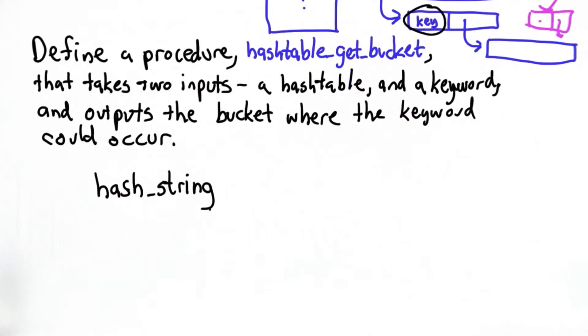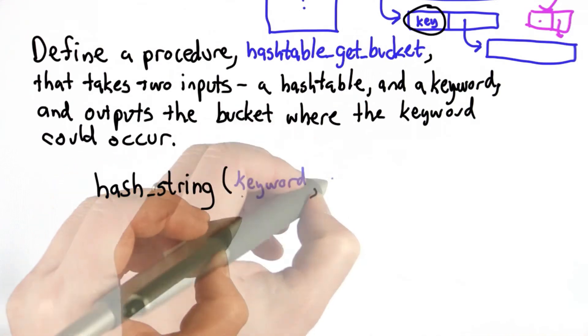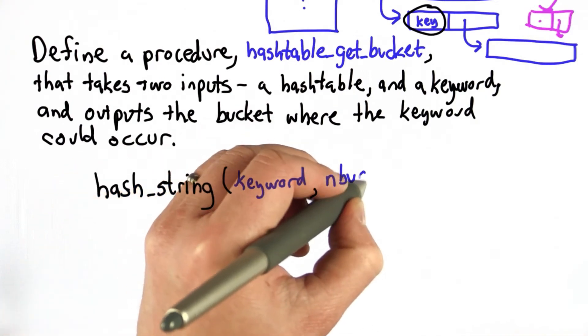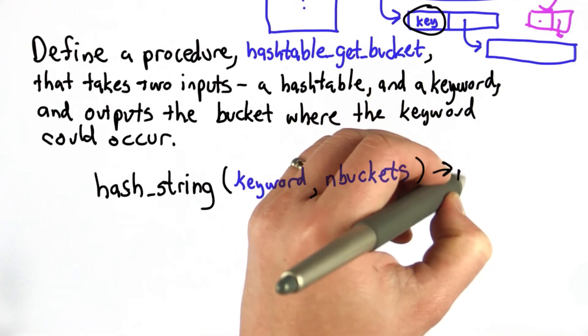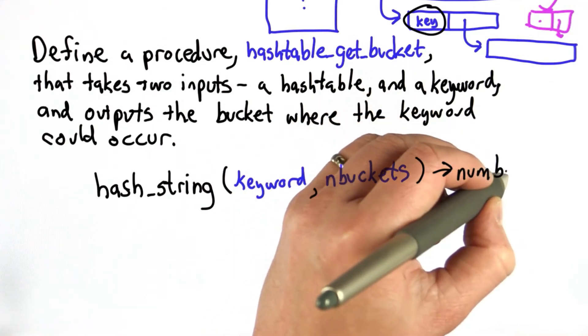One function that will be useful for doing that is the hash_string procedure that you defined earlier. hash_string takes two inputs: a string, which is the keyword, and a size, the number of buckets. It outputs the number, which is the index of that bucket.